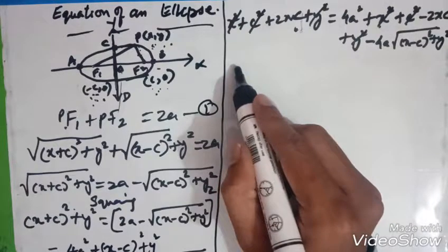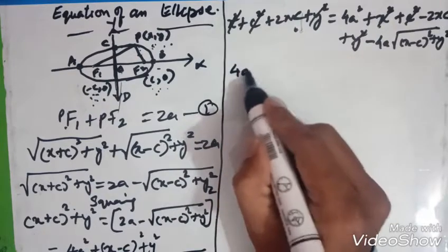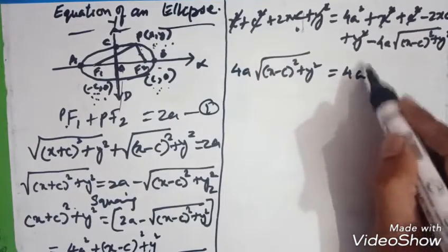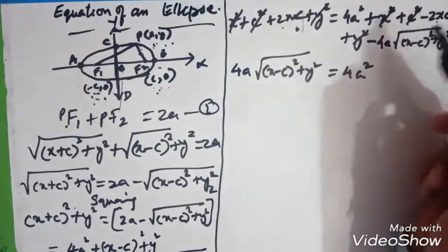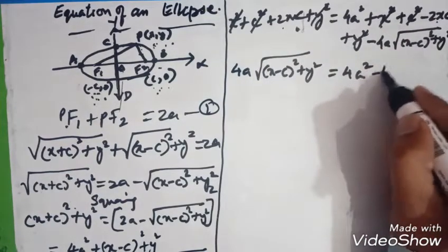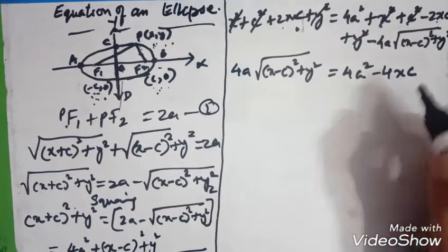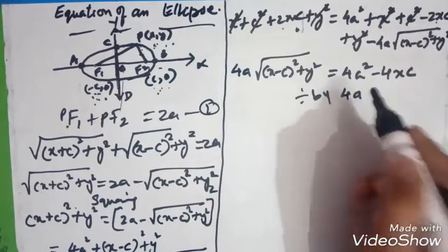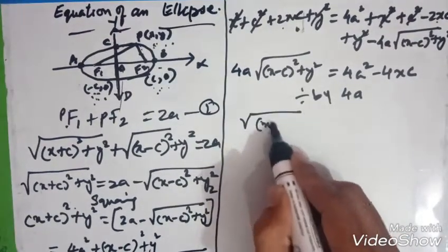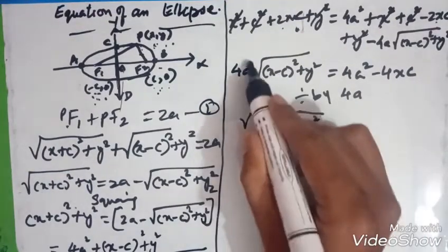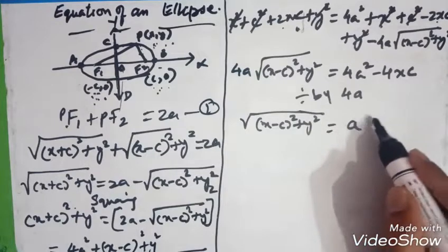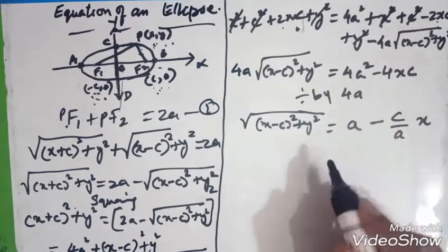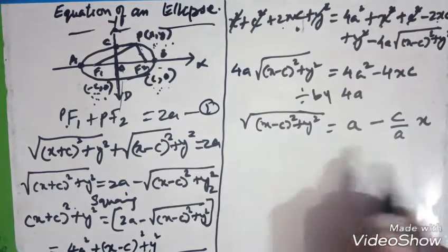After rearranging, we get 4A·√[(x − C)² + y²] = 4A² − 4XC. Dividing both sides by 4A, we obtain √[(x − C)² + y²] = A − (C/A)·X.